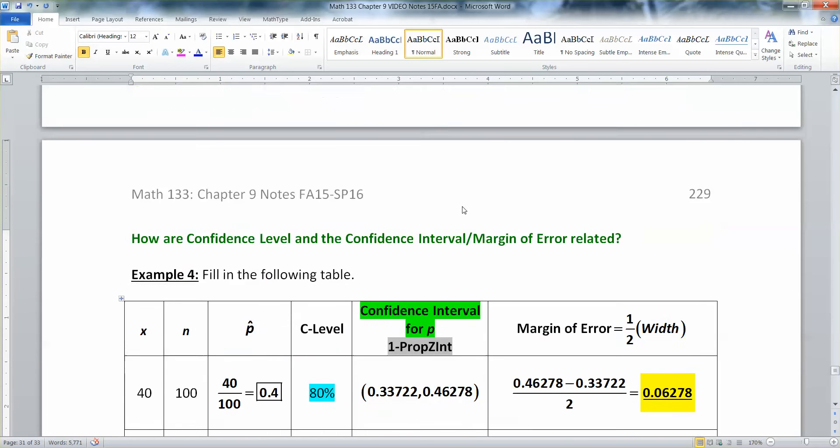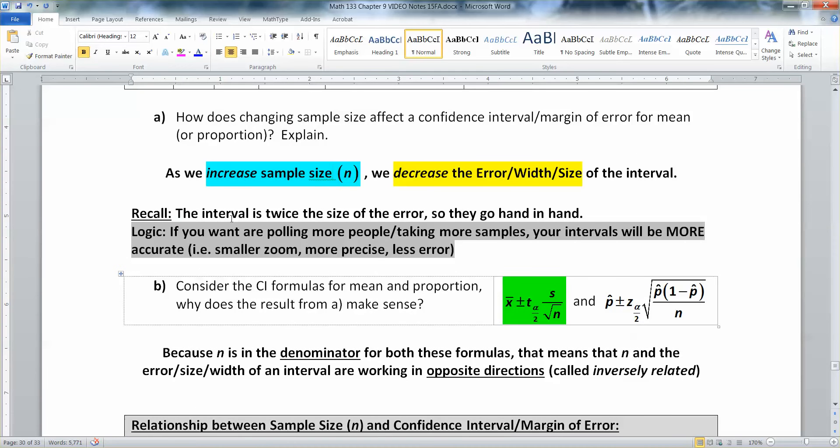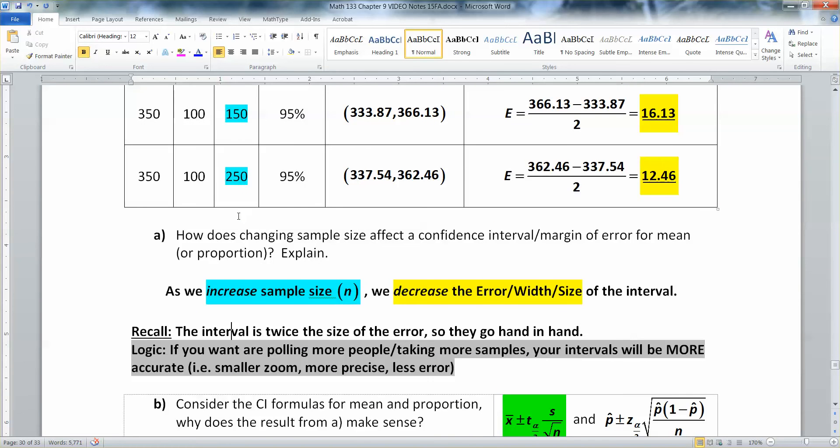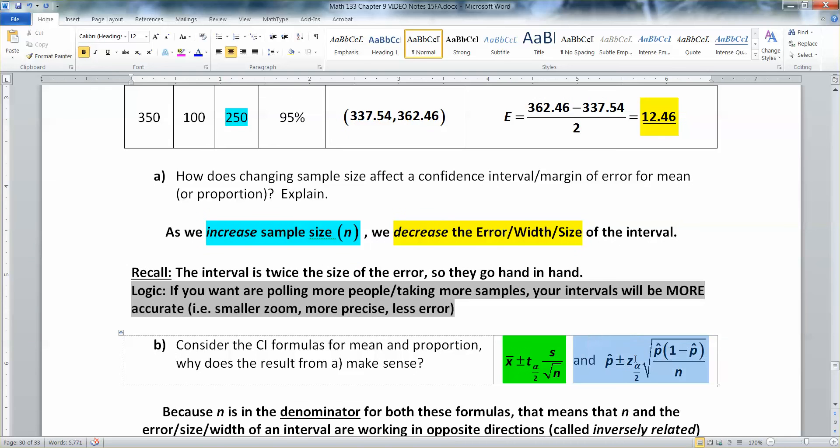We saw two things. We saw that error and confidence level go together. They're directly related. And just a reminder, sample size and error are inversely related. That's because sample size is in the denominator of these two formulas. So, if you go pull more people, if you take more samples, you're able to be more accurate. You're able to be more precise with your interval. It can be smaller. It has less error to it, right? You can kind of zoom in like you would on a camera. Because you've got a larger sample, you have more ideas of what's going on. You have a clue as to what's happening. And you can be more precise with your interval.